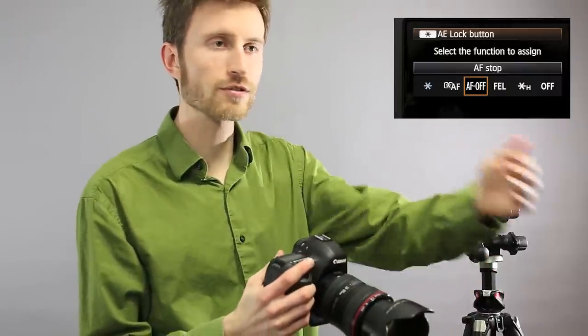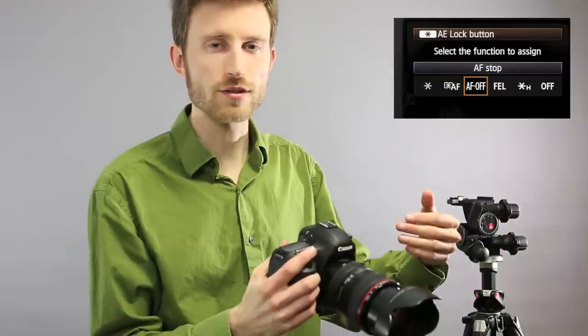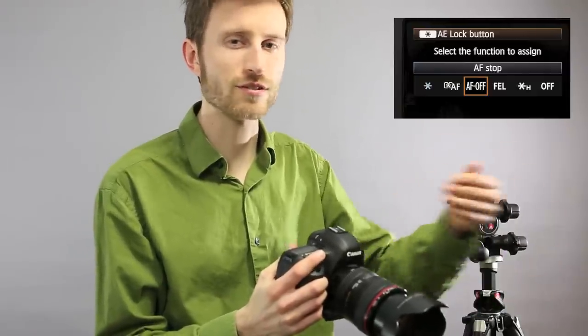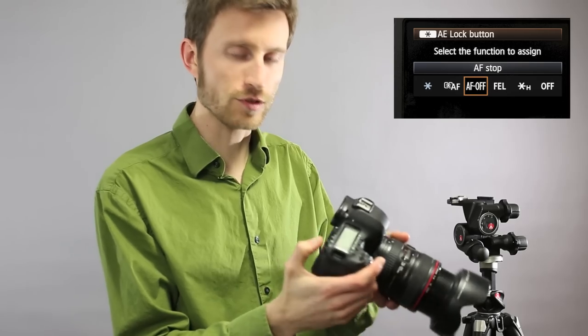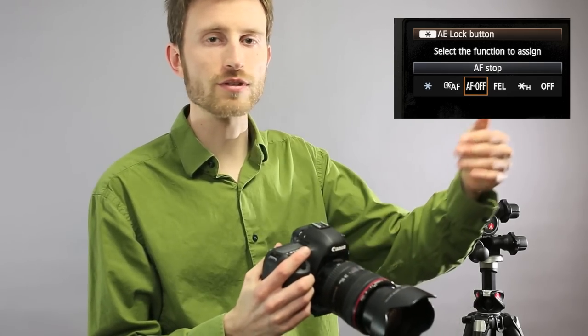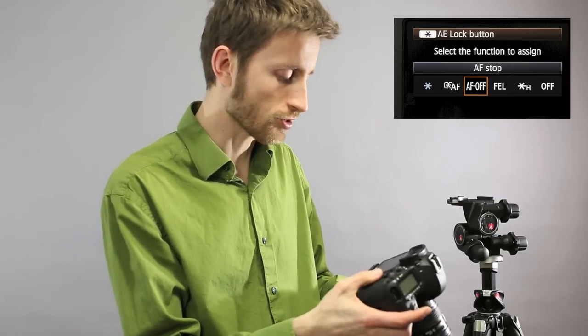Autofocus can be stopped. Let's say you found your subject in focus but it's a dark situation. Your camera you think may start to hunt on you after this but you can just press that star and you know that your focus won't be adjusting after that.